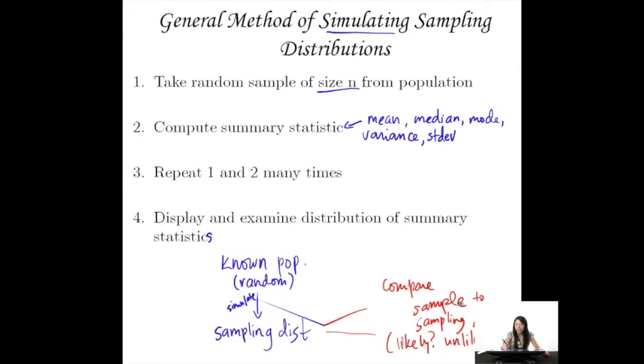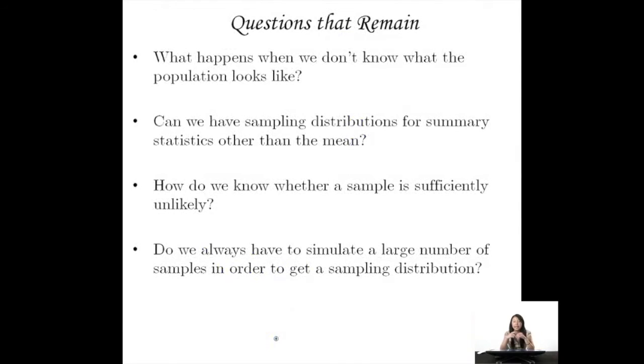But in order to do this, what you need to do is compute the summary statistic for your sample. So if you have a whole bunch of variances here, you need to compute variance for your sample. And then you compare it to your sampling distribution. And we make a call. Is it likely? Is it unlikely?